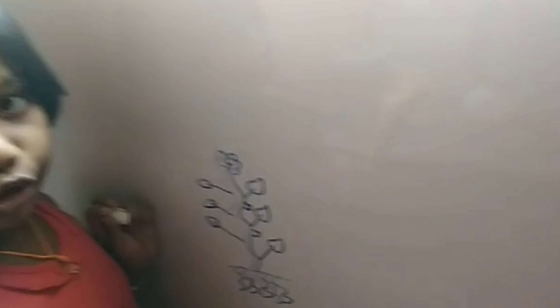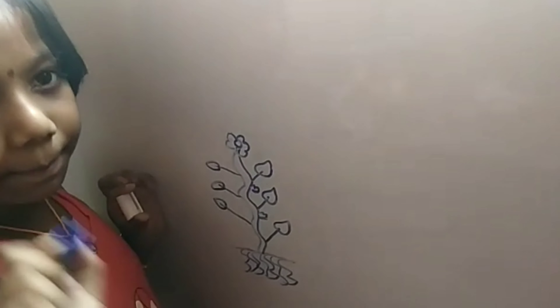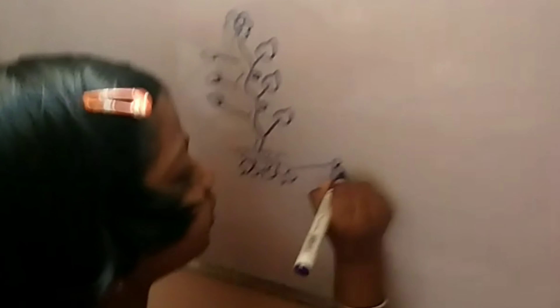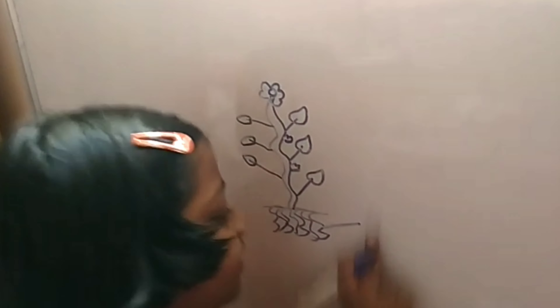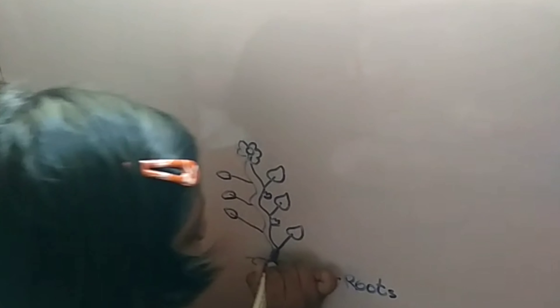This is flower. Now I am going to show you how to write parts. This is root. R-O-O-T, root. This is stem.